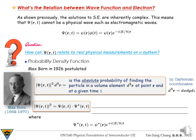To answer this question, Max Born, a German physicist, postulated in 1926 that the square of the absolute magnitude of the total wave function, given here, times a differential volume d³r, represents the absolute probability of finding a particle in a volume element, or a differential volume d³r, at a particular place specified by the position vector r, and at a given time t.